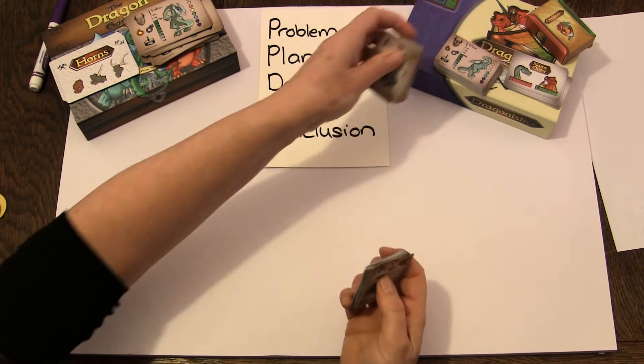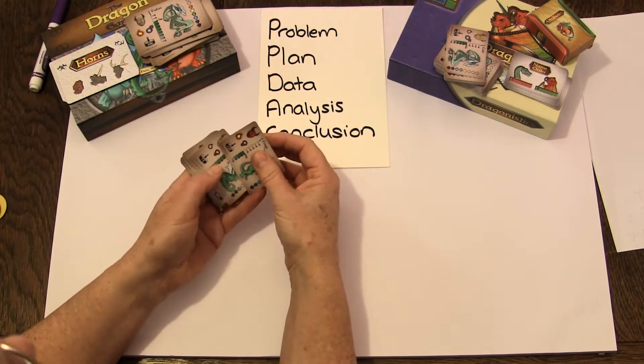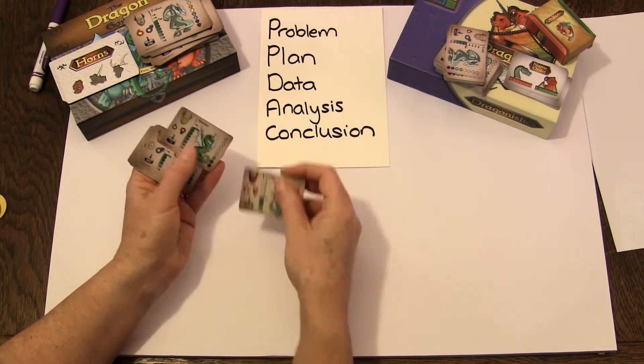So each group of children gets a bunch of cards and it really doesn't matter if they're the same number or not, though at earlier levels it might be better. And we're going to sort them into dangerous and friendly.